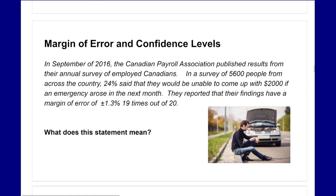With using and misusing data, some things you might see in reports or studies include a margin of error and confidence levels. For example: in September 2016, the Canadian Payroll Association published results from their annual survey of employed Canadians. In a survey of 5,600 people, 24 percent said they'd be unable to come up with $2,000 if an emergency arose in the next month. They reported their findings have a margin of error of plus or minus 1.3 percent, 19 times out of 20. What does that statement mean?